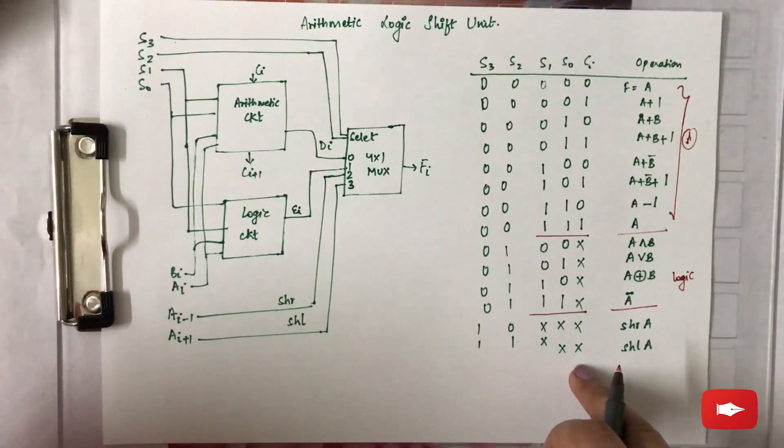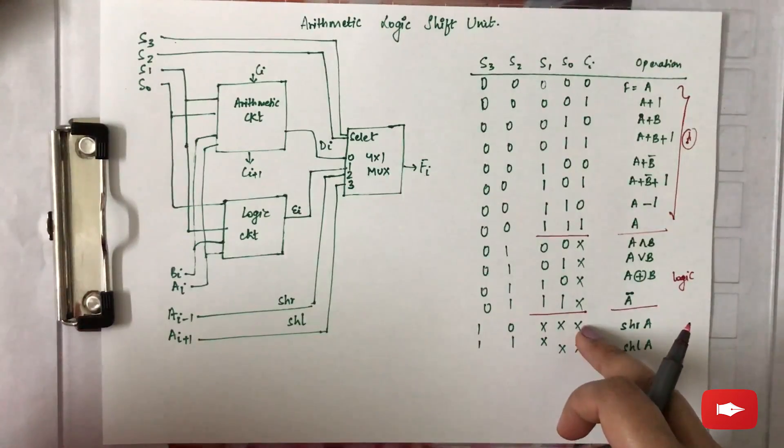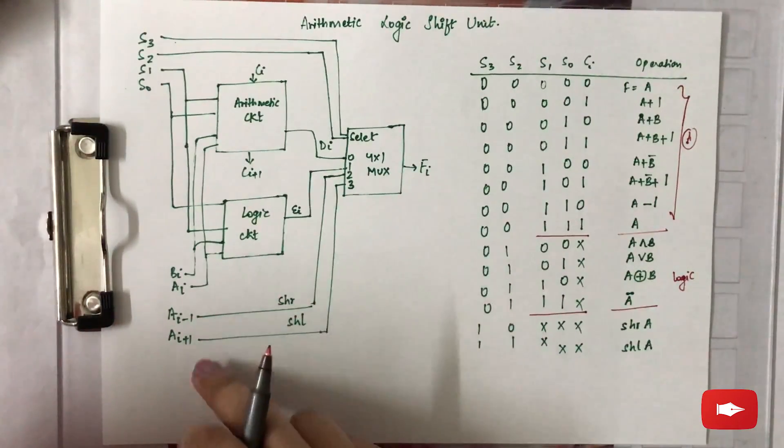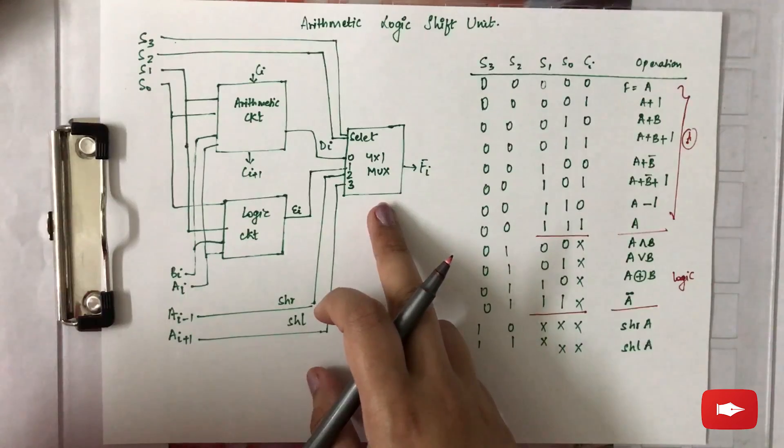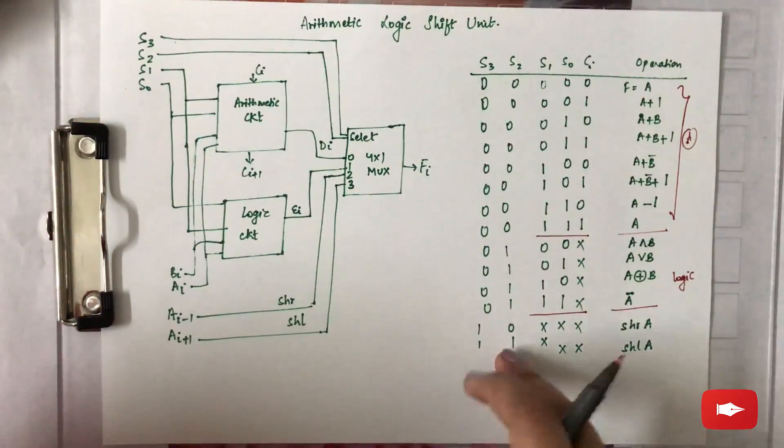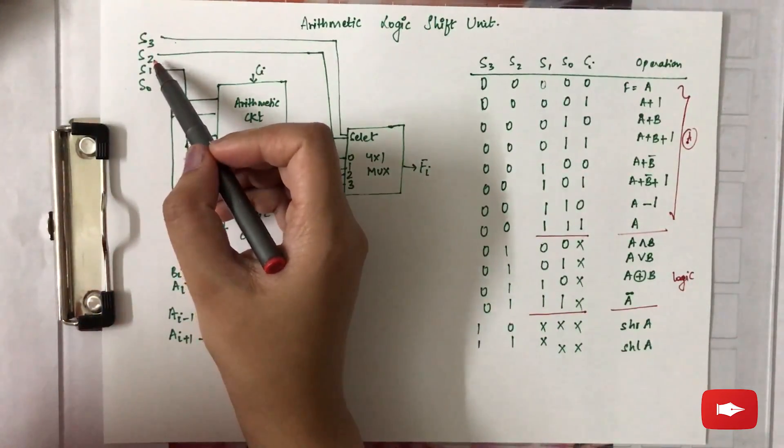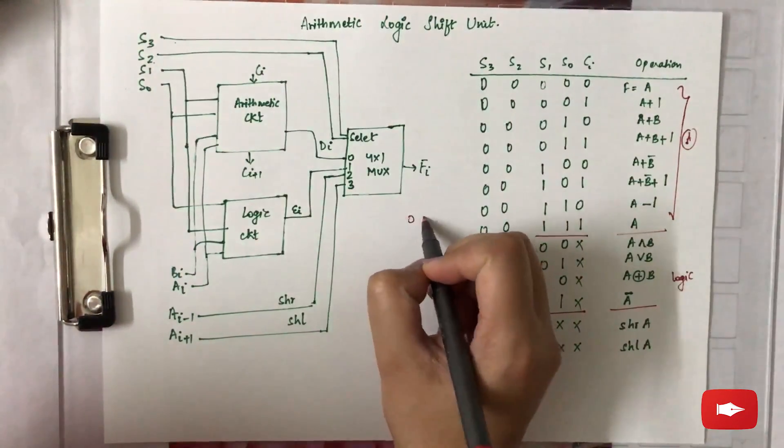And at the end, because we don't need select lines s0 or s1, neither the carry input, the input for shift right and shift left are directly entered into the multiplexer. Therefore in that case, 1 0 and 1 1, that is the select line s3 and s2 value.